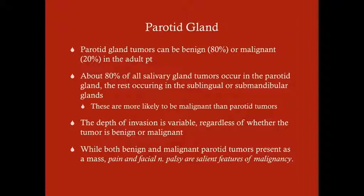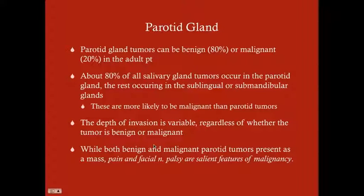Parotid gland tumors can be benign or malignant — about 80% are benign and 20% are malignant, specifically for the parotid gland. If a tumor is in the submandibular or sublingual gland, it's more likely to be malignant than if it were in the parotid. The vast majority of salivary gland tumors happen in the parotid. Depth of invasion is variable and not necessarily an important marker, though benign tumors can be invasive as well.